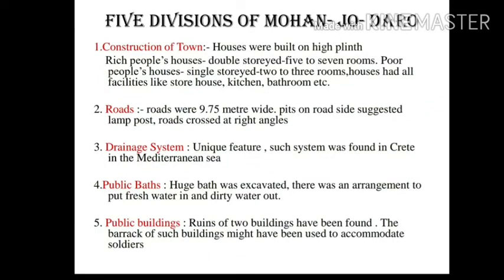The fourth division is the public bath. A huge public bath was excavated at Mohenjo-daro with arrangements to put fresh water in and dirty water out. There might have been a facility for hot water, and small rooms for changing clothes were located on the periphery of the great bath. These public baths might have been used especially during festivals and religious ceremonies.